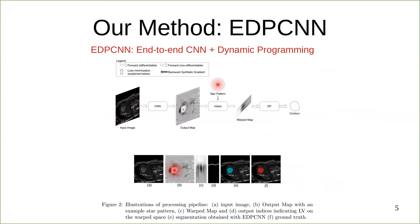We call it EDPCNN: end-to-end CNN plus dynamic programming. An image goes through U-Net, which provides an output map. Then the star pattern is applied onto that output map. An interpolation module is then used to extract the values on the star pattern. Then we use the active contour algorithm on those values to extract the chosen points. We can then project these points back onto the image to get the object boundary.